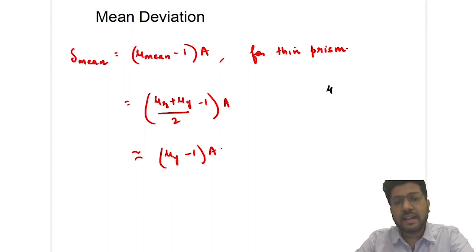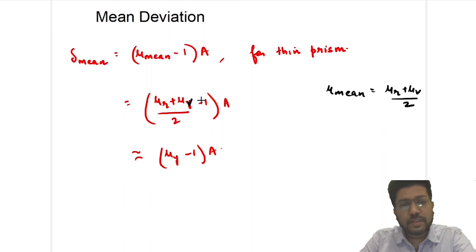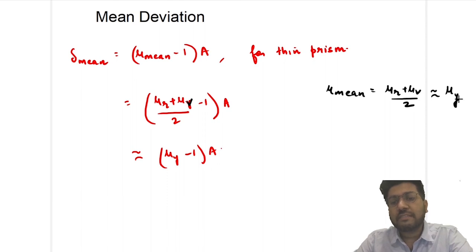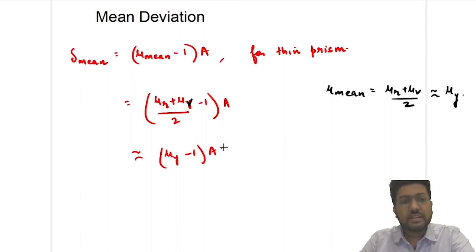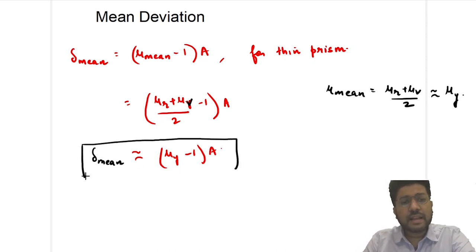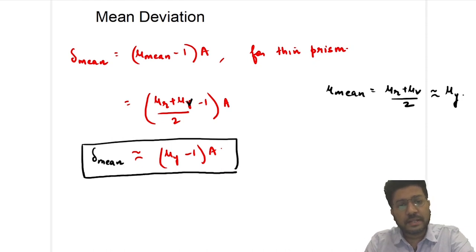Now μ_mean is written as μ_mean = (μ_r + μ_v)/2, and this is nearly equal to the refractive index of yellow light. So δ_mean will be written as (μ_y − 1)·A. Again, this is only valid for thin prisms. So this is mean deviation.